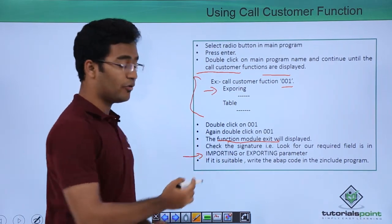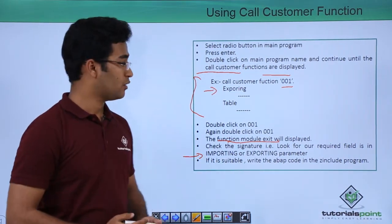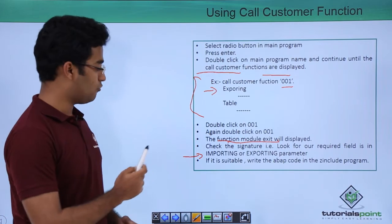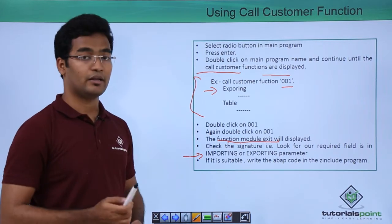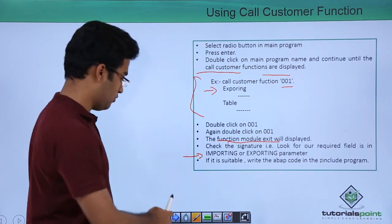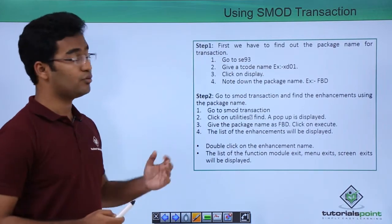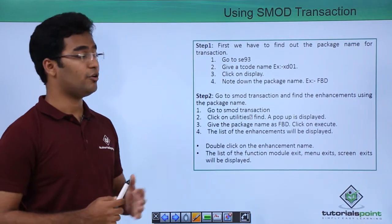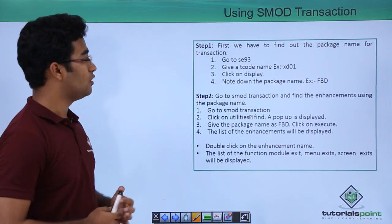If it is suitable, write the ABAP code in the Z-include program. Till here we have found our exit. This was one of the ways — using Call Customer Function. Then we have the second way using the SMOD transaction code.